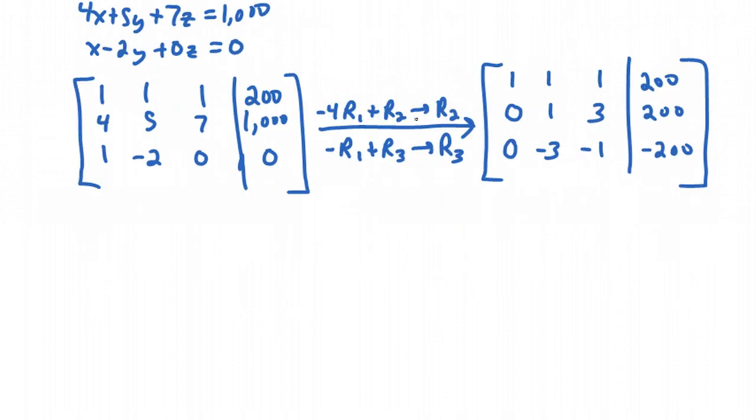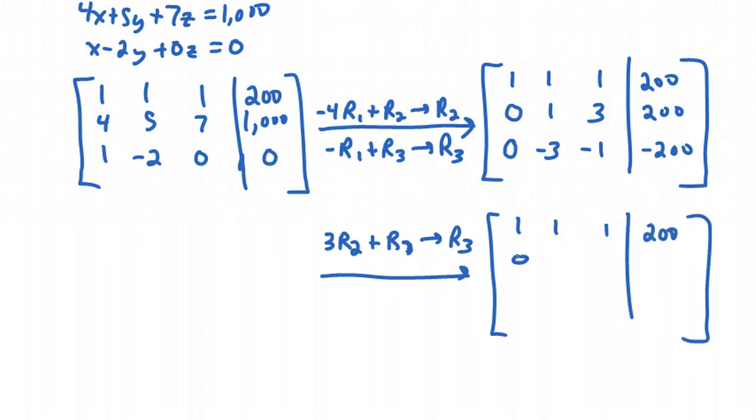Notice that we have 0s here. We want to get a 0 in this next place, where we have the negative 3. So what we're going to do is multiply this middle row by 3, so that when we add it to the last row, we'll get a 0 there. So we're going to do 3 times row 2 plus row 3 to give us a new row 3. Now notice row 1 and row 2 are not changing. 1, 1, 1, 200. 0, 1, 3, 200. But we are going to get a new third row.